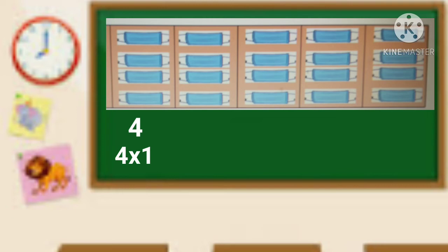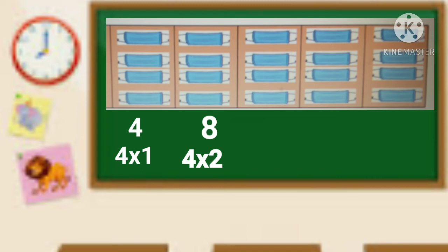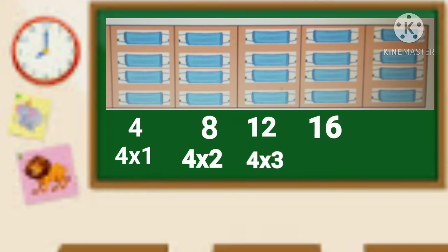Tama! Paano naman matutukoy ang pangalawang multiple? Very good! I-multiply ang bilang ng face mask na 4 sa bilang ng kahon na 2. Ang sagot ay 8. Para matukoy naman ang pangatlong multiple, i-multiply ang bilang ng face mask na 4 sa bilang ng kahon na 3. 4 times 3. Ano naman kaya ang pangapat na multiple? Ang gagaling ninyo, ito ay 16 o labing anim.